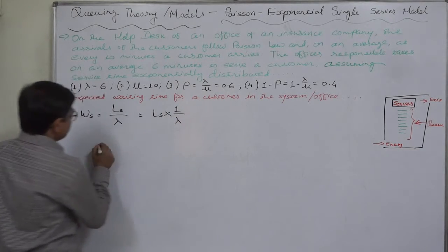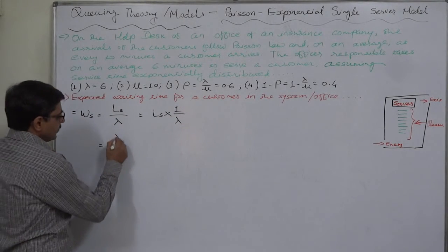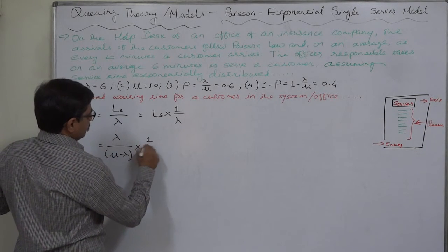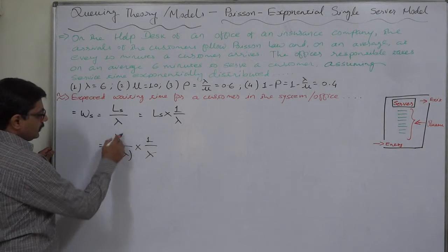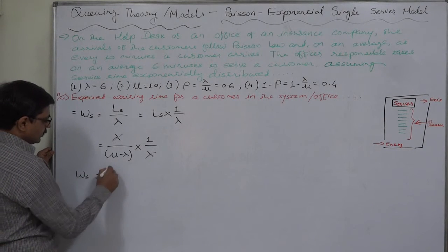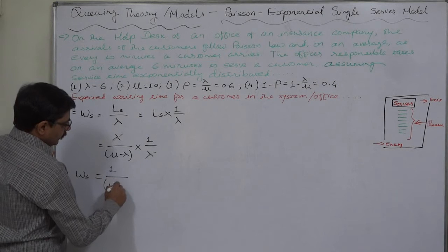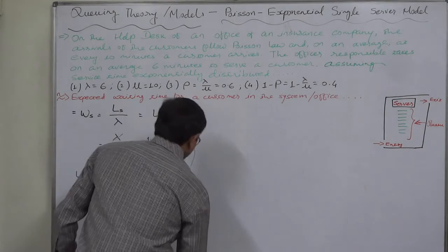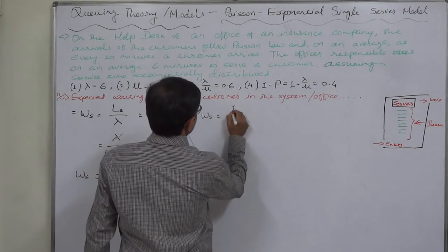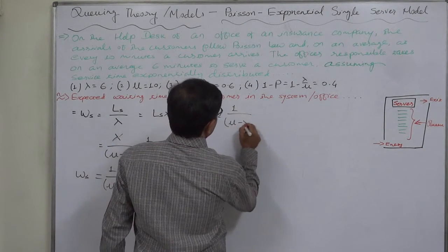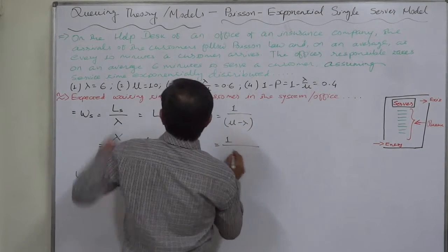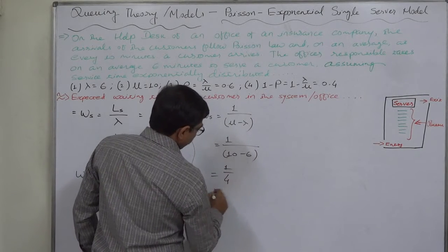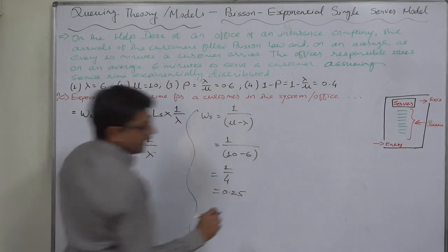It is lambda upon mu minus lambda. So the formula of WS comes to 1 upon mu minus lambda. We can calculate that: 1 upon mu is 10, minus lambda is 6. So it is 1 by 4 or 0.25 unit of time.